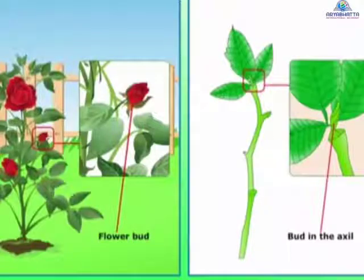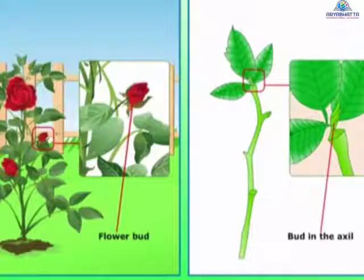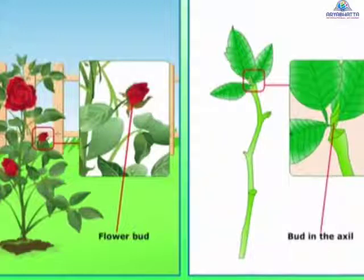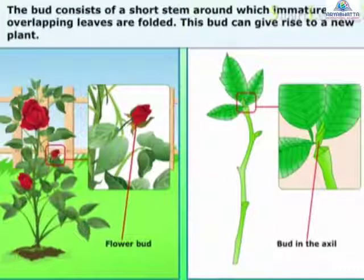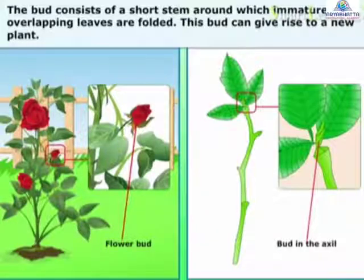You must have seen flower buds. Similarly, there are buds in the axil, that is the point of attachment of the leaf at the node. The bud consists of a short stem around which immature overlapping leaves are folded. This bud can give rise to a new plant. These buds are called vegetative buds.